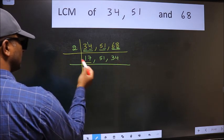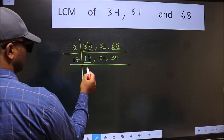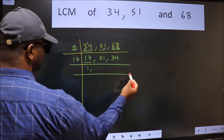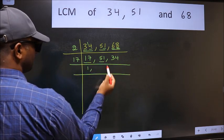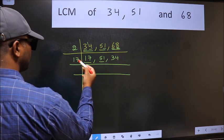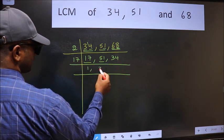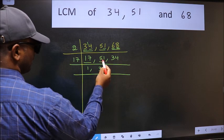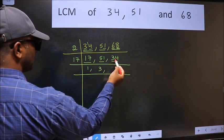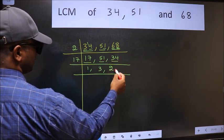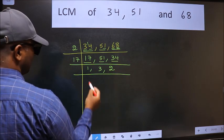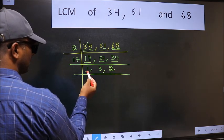Now here we have 17. 17 is a prime number, so 17 ones are 17. The other number 51. When do we get 51 in the 17 table? 17 threes are 51. The other number 34. When do we get 34 in the 17 table? 17 twos are 34.